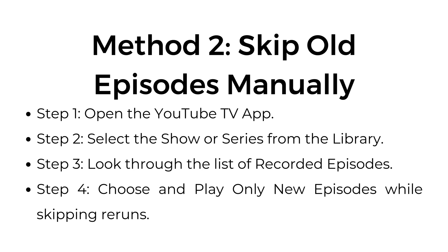Method number two: skip old episodes manually. Step one, open the YouTube TV app. Step two, select the show or series from the Library. Step three, look through the list of recorded episodes. Step four, choose and play only new episodes while skipping reruns.